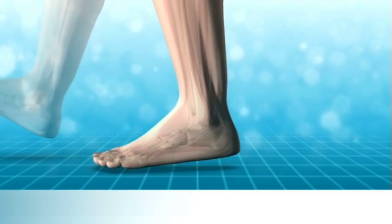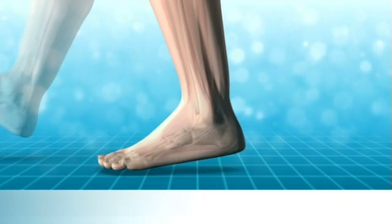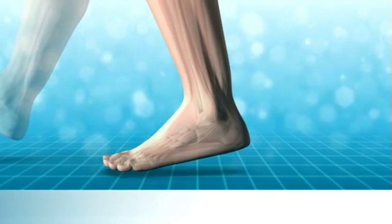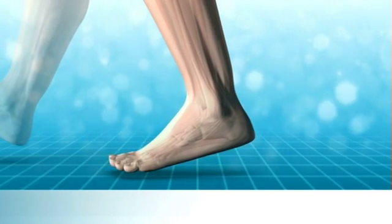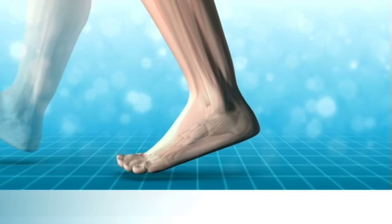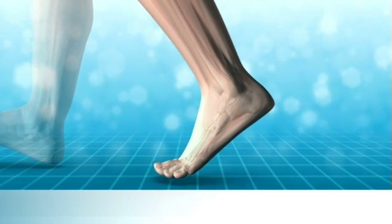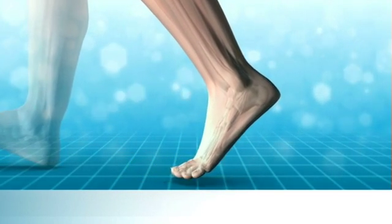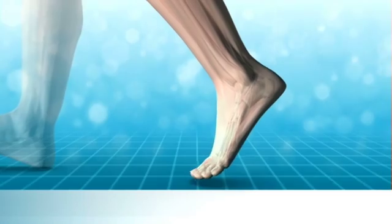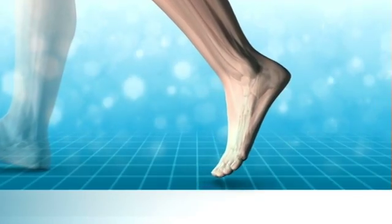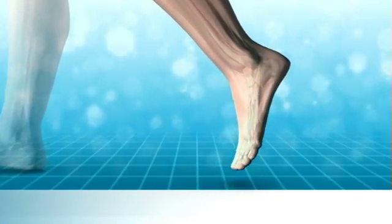Last but not least, your body prepares itself to move into the propulsive phase of gait. This is when your heel leaves the ground and your foot goes into the toe-off phase of gait. And this is what we call the gait cycle, or in more simple terms, the walking cycle.